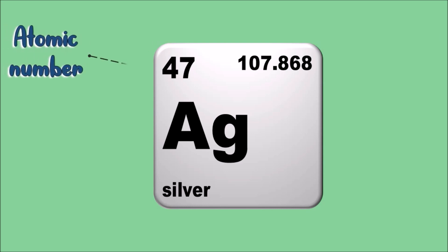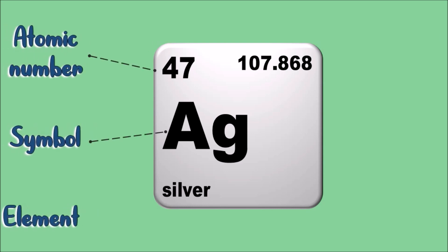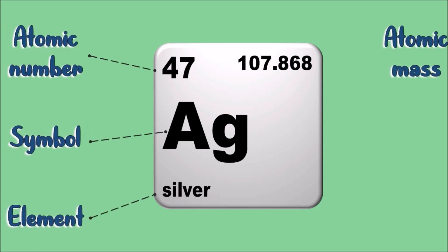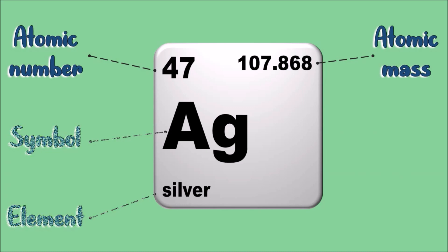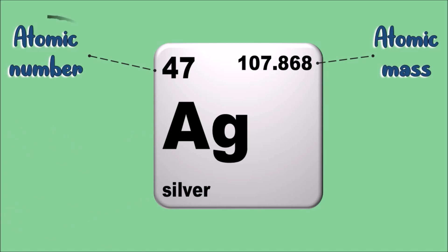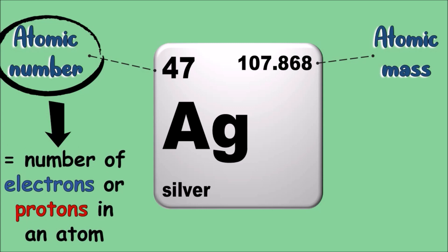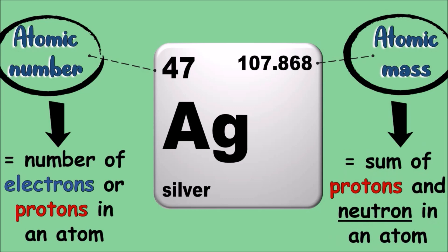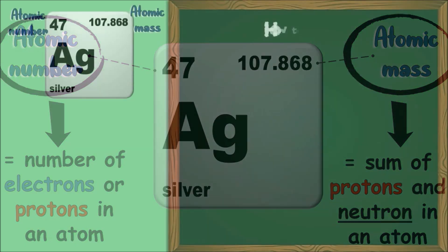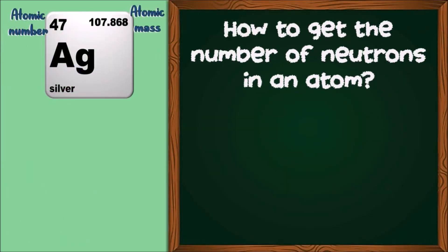The number of protons and neutrons that an atom contains identifies the atom of an element. The atomic number of an element tells the number of electrons or protons present in an atom. The atomic mass is the sum of the number of protons and neutrons in an atom. To get the number of neutrons in an atom, you may subtract the number of protons from the atomic mass.